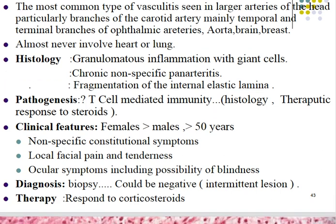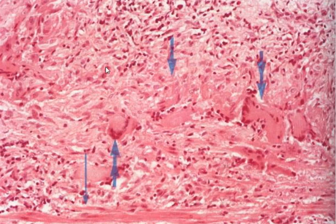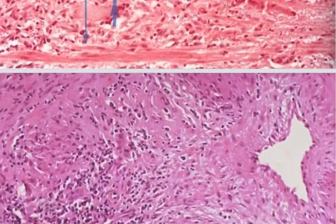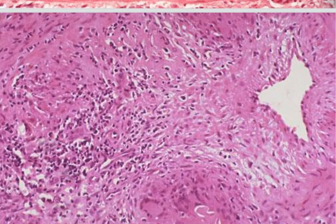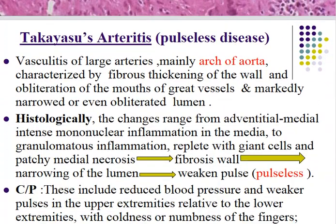Therapy includes response to corticosteroids. The histological picture of temporal giant cell arteritis shows diffuse granulomatous inflammation of the vessel wall, presence of giant cells, fragmentation of smooth muscle of the media, scattered giant cells, and fibrosis, in addition to narrowing of the lumen resulting in ischemia of the areas perfused by these vessels.